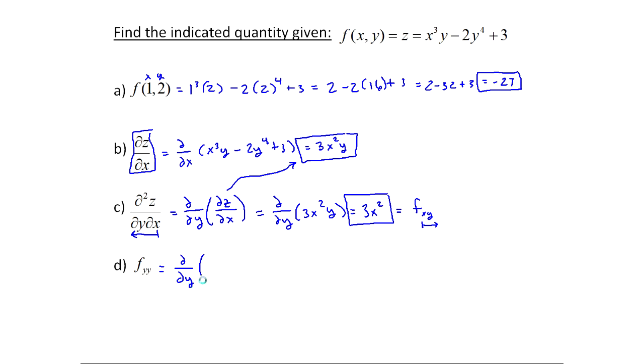So another way to write what part d is asking for is it's asking for the partial derivative with respect to y of the partial derivative of z with respect to y. And another way that would be written down is partial squared z of partial y squared. Now you wouldn't have to write this part down every time, but it helps me when I'm doing problems of keeping track of what I'm supposed to do first.